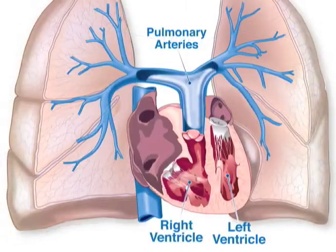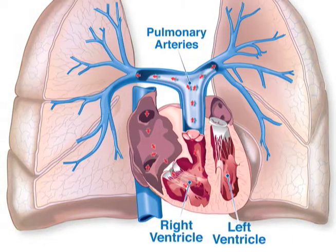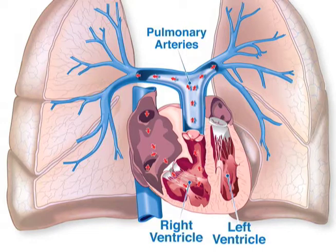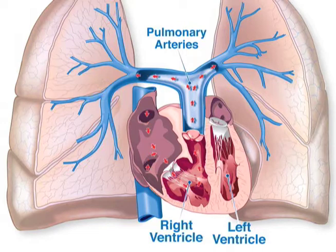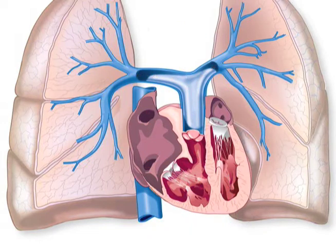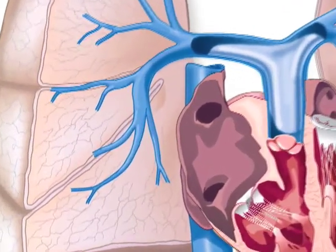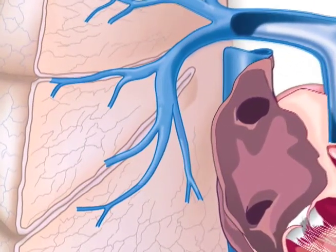The pulmonary arteries are shown in blue. They normally carry blood from the right ventricle of the heart to the lungs. Let's take a closer look at the small pulmonary arteries in the lungs.